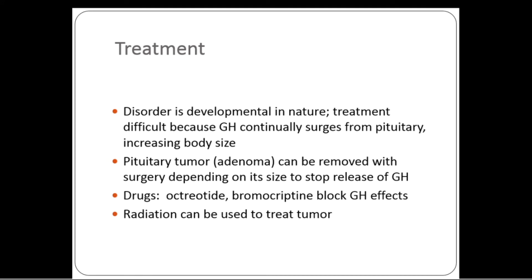Treatment of gigantism is very difficult because the disorder is developmental in nature and growth hormone continually surges from the pituitary. However, the tumor can be removed surgically to reduce its size and stop growth hormone production. Drugs such as bromocriptine can be given to block the effects of growth hormone, and radiation can be used to treat the tumor and halt growth hormone production.